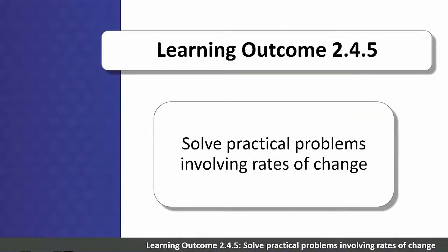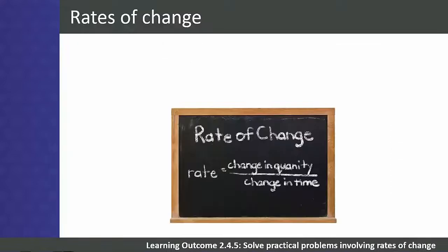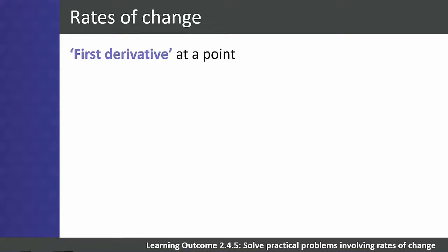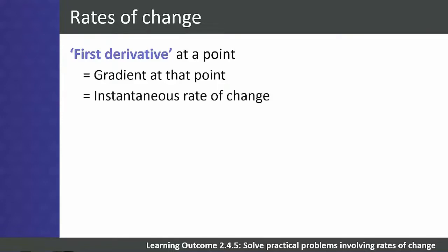Learning outcome 2.4.5: solve practical problems involving rates of change. In general, a rate of change is the rate at which something increases or decreases over a period of time. The derivative gives us the slope or gradient of a function at any point, and the instantaneous rate of change at a point is the gradient at that point.